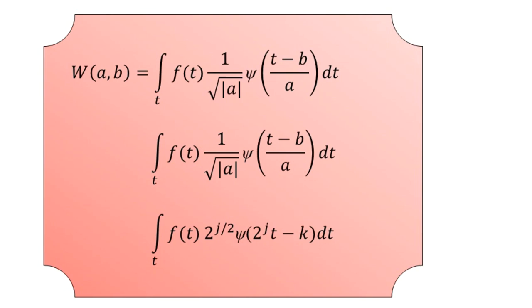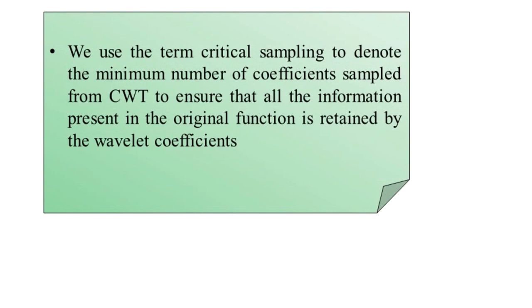The sampling process is called critical sampling for exactness, defining the resolution of the discrete wavelet transform in both the time and frequency domains. The term 'critical' refers to the minimum number of coefficients sampled from the continuous wavelet transform, ensuring all information present in the original function is retained by the wavelet coefficients without any loss.